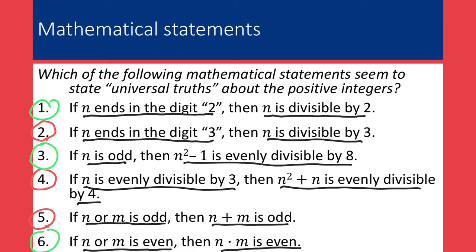The false statements are fairly easy to address — we can give a convincing reason because we can just give an example. So for number two, people in class mostly said false because of n equals 13. 13 ends in 3, but 13 is not divisible by 3. Number four was a little challenging, but we came up with the example n equals 9. Statement number four is false because 9 is divisible by 3, but 9 squared plus 9 is not divisible by 4.